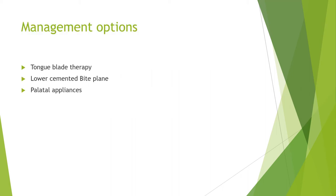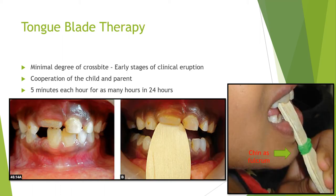There are three main management options. Tongue blade therapy is used for very minimal anterior crossbite correction when the crossbite has just begun. A lower cemented bite plane is used when the crossbite is more established. Palatal appliances are used when the crossbite is completely established. The choice depends on how severe the crossbite is.